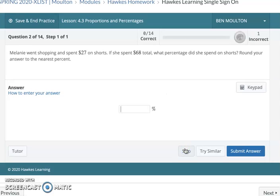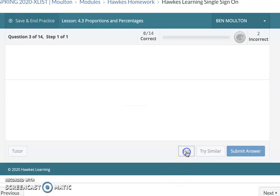Melanie went shopping and spent $27 on shorts. If she spent $68 total, what percentage did she spend on shorts? Round your answer to the nearest percent. I think this is the one that might give you a little bit of trouble. Actually, I stand corrected. This one isn't too bad. You're just dividing your part by your total. So set 27 over 68 and then multiply that by 100.